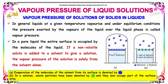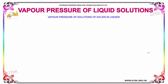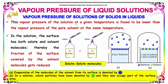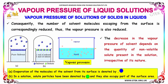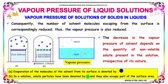Here are two pictures indicating a pure solvent and one mole of solvent with one mole of solute. The evaporation of solvent molecules is denoted by this. In a solution, solute particles are denoted by the green color and they also occupy part of the surface area. The vapor pressure of the solution at a given temperature is found to be lower than the vapor pressure of the pure solvent at the given temperature. In this solution, the surface has both solute and solvent molecules; thereby the fraction of the surface covered by the solvent molecules gets reduced. Consequently, the number of solvent molecules escaping from the surface is correspondingly reduced. Thus, the vapor pressure is also reduced.